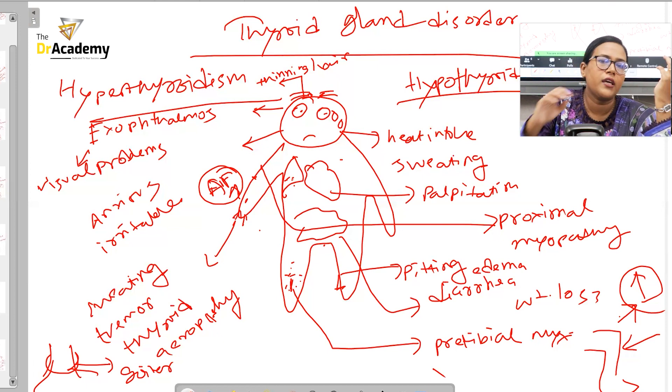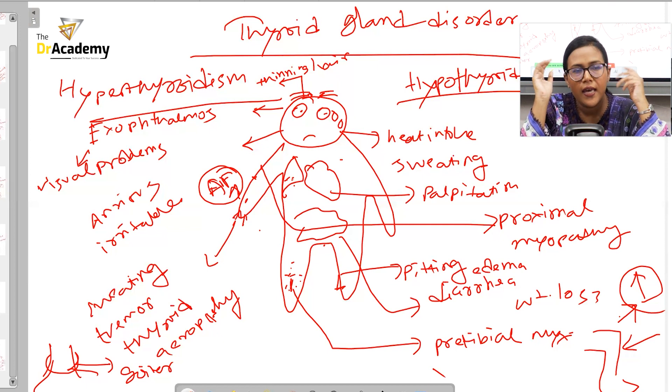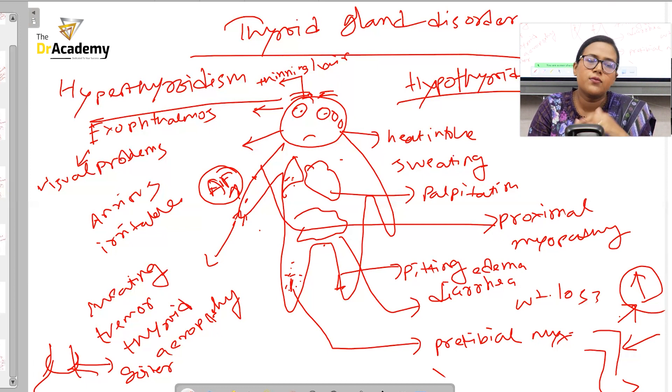Is there any special instruction that we give before examining for the thyroid gland to the patients? We offer the patient a sip of water. We give the patients a glass of water. And then we tell the patient to take a sip of water and then hold it in. Don't swallow it as of yet. And then we go behind the patient and place our hands. And then we tell the patient to take that sip of water, swallow that. And if it moves with the deglutition of the swallowing, it's most likely a thyroid gland enlargement.